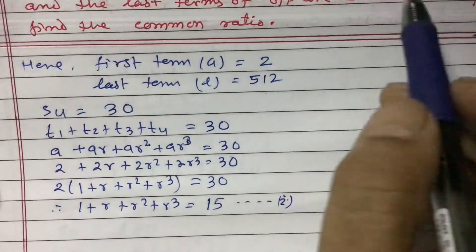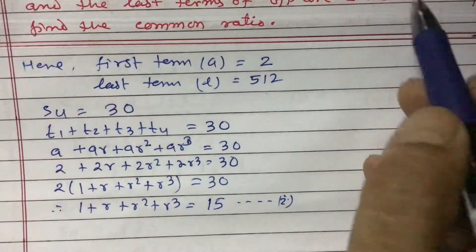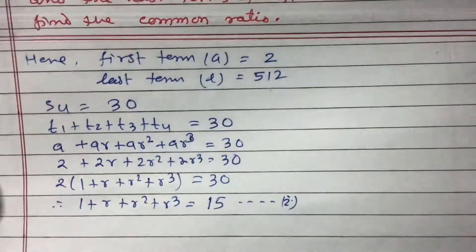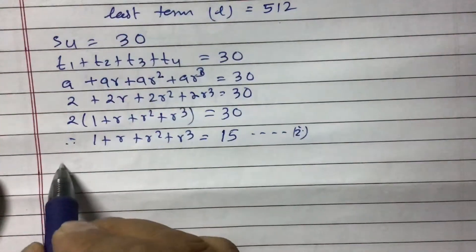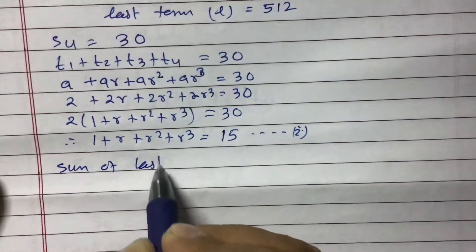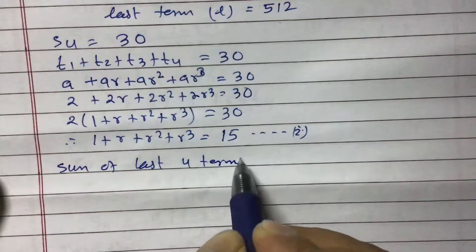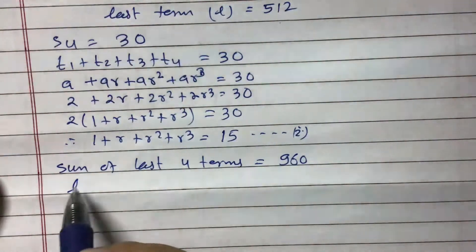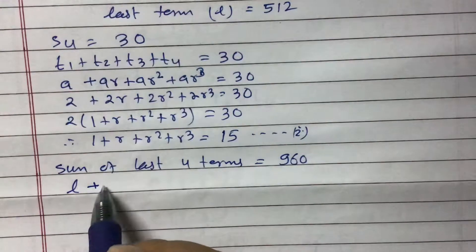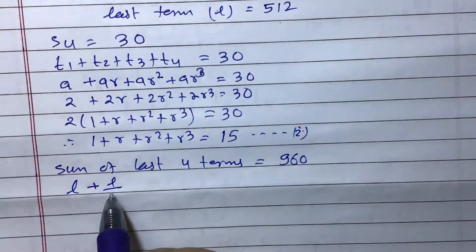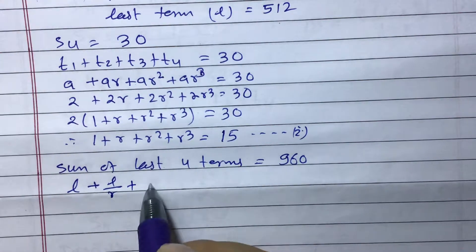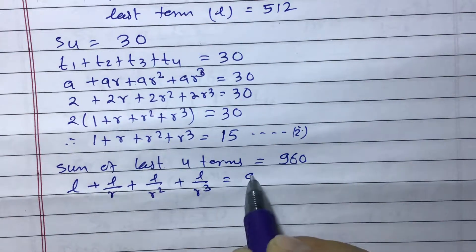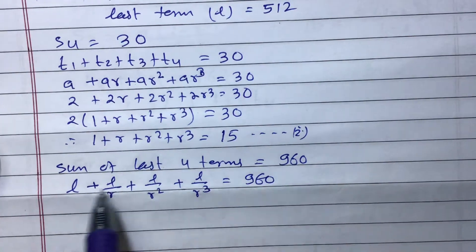Similarly, we are given that the sum of the last four terms equals 960. The last term is L, the second last term is L/r, the third last is L/r², and the fourth last is L/r³. So L + L/r + L/r² + L/r³ equals 960.